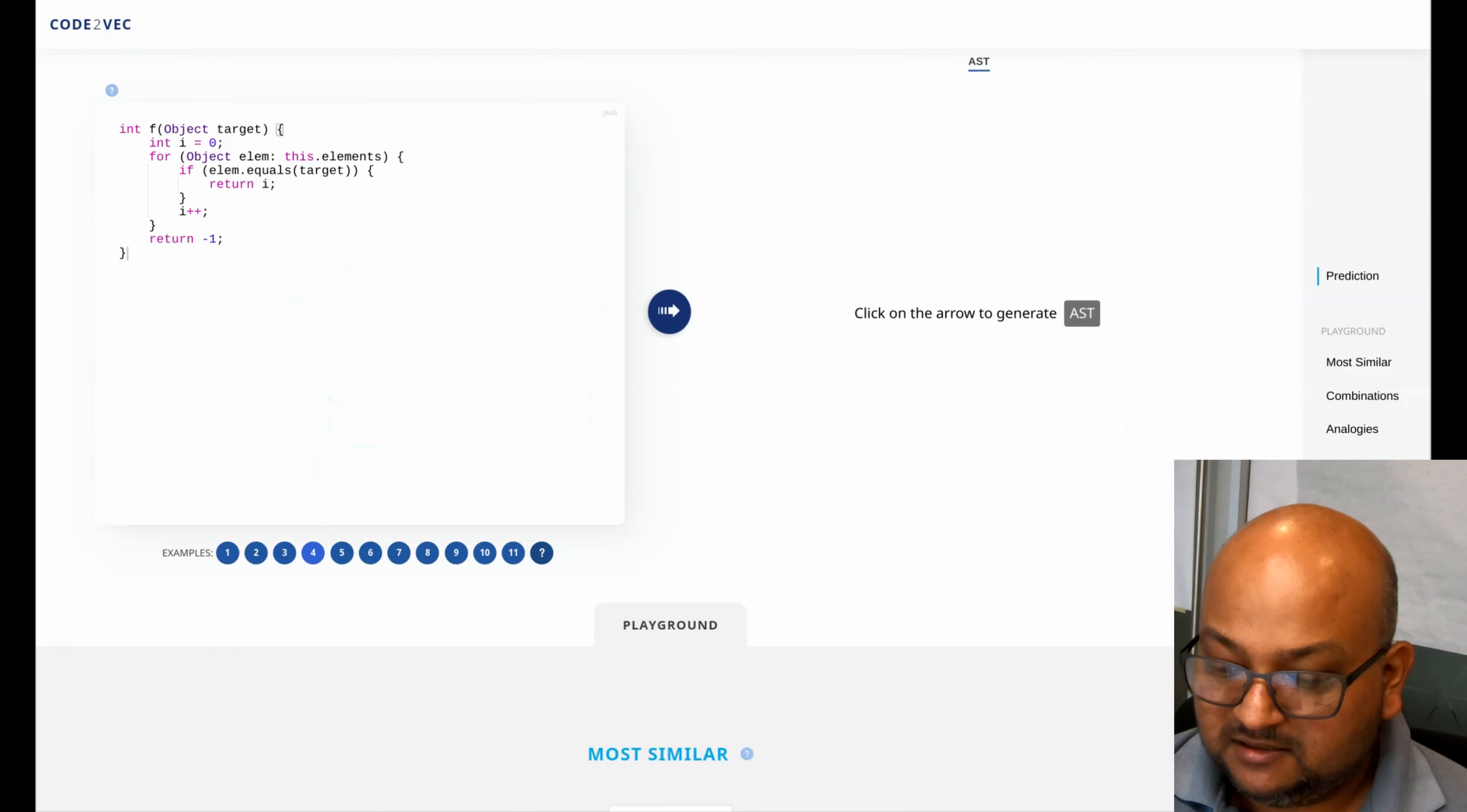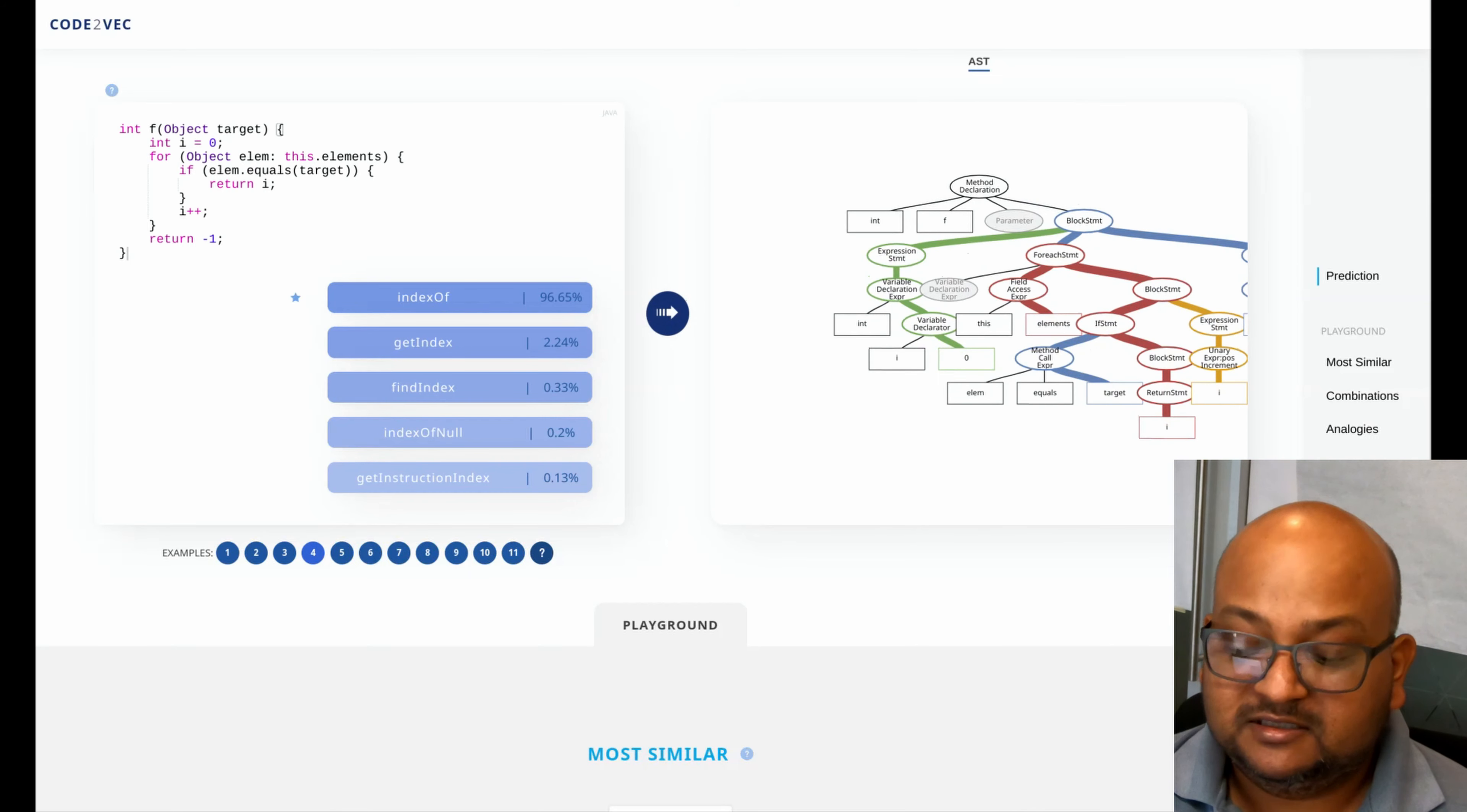This one returns the index of an element if it is found within an array and the name it returns is indexOf. So that's pretty good. It's doing a really good job of predicting sensible names for snippets of code.